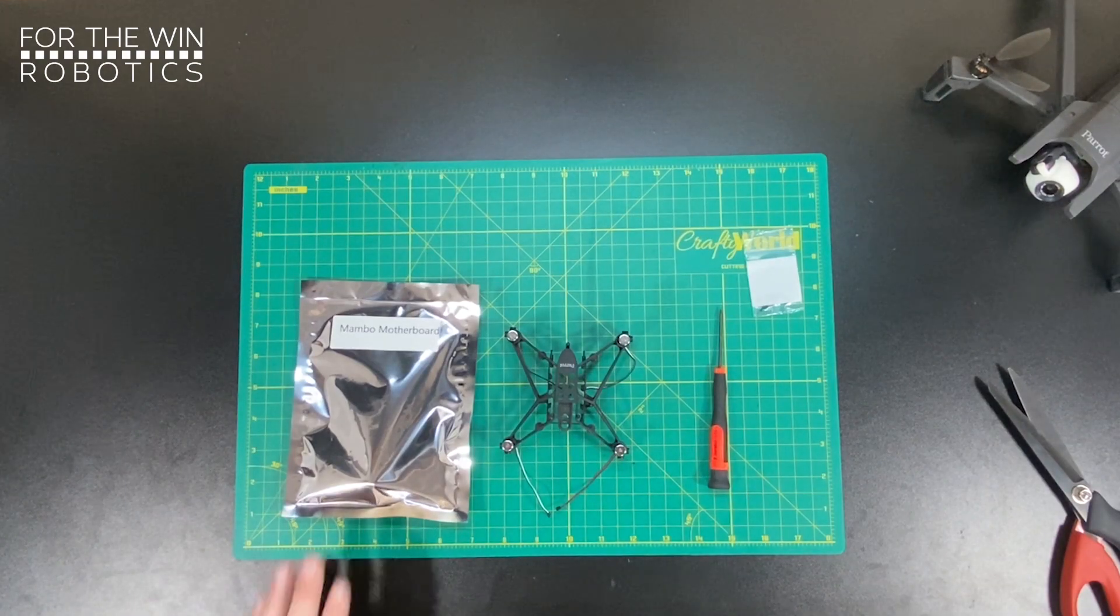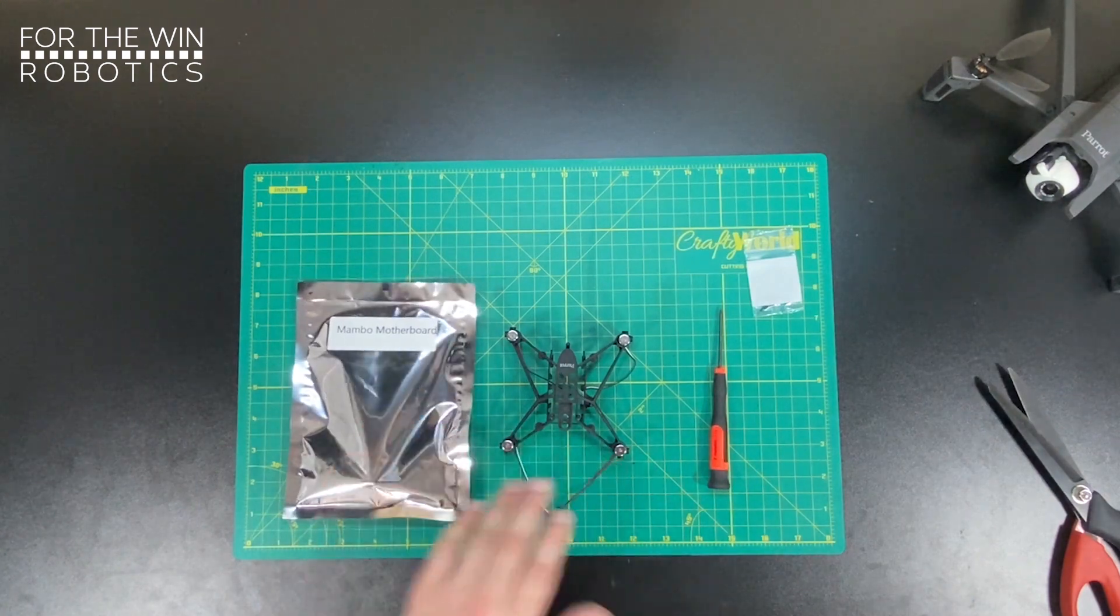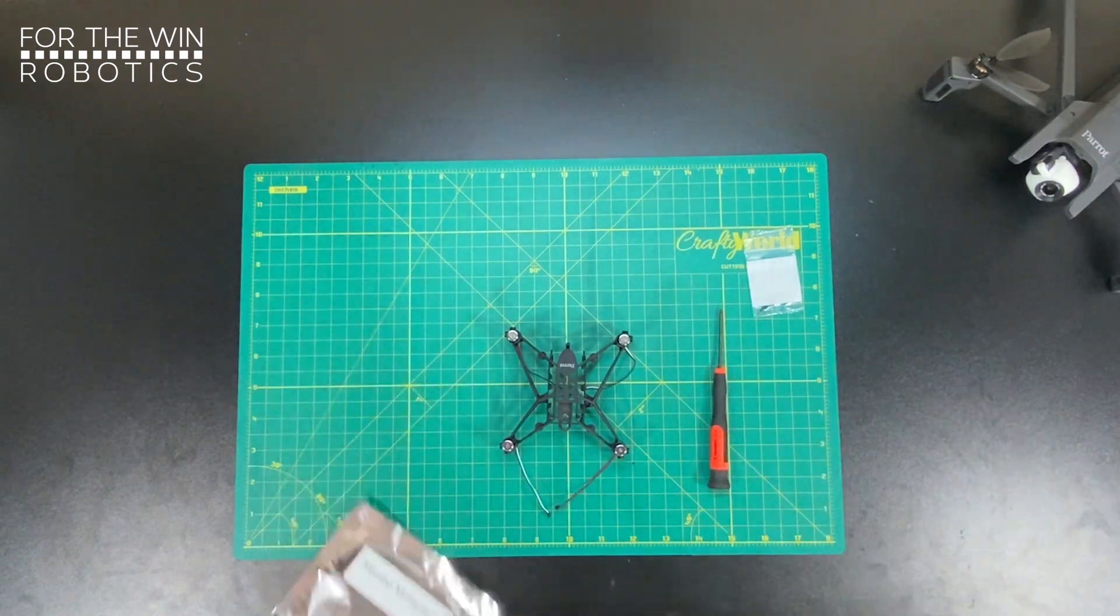All right, so the next step is attaching the Mambo motherboard to the central body. We're just going to cut that open.